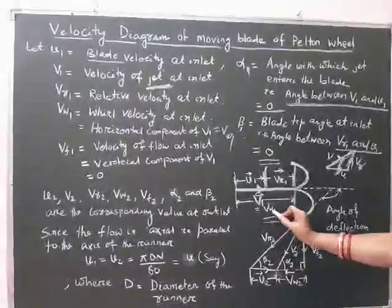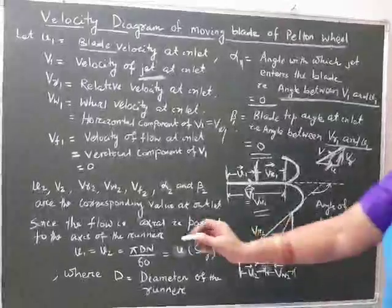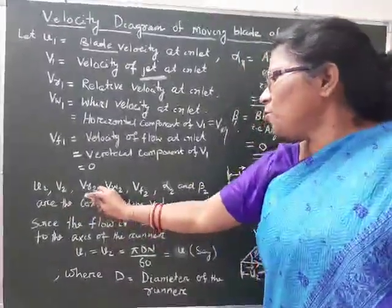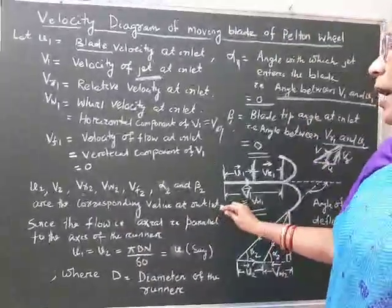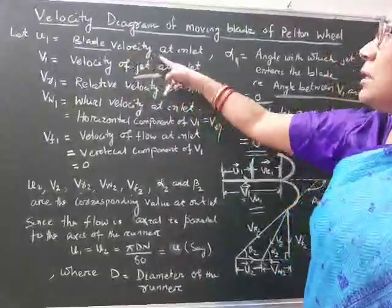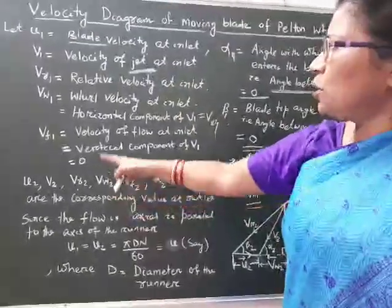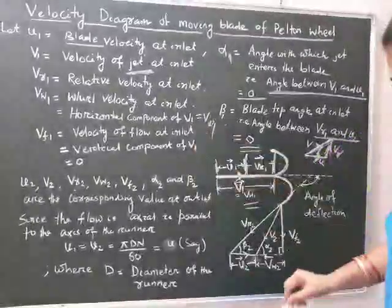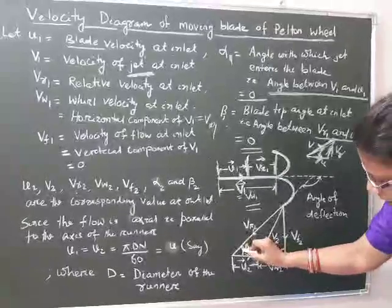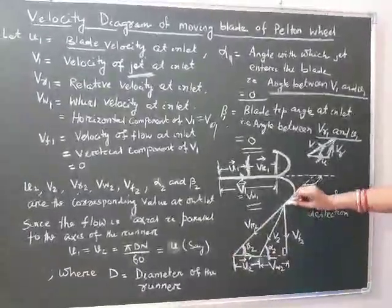At outlet, the corresponding values are u2, V2, Vr2, Vw2, Vf2, alpha2, and beta2. u2 is the blade velocity at outlet, V2 is the velocity of the jet at outlet, Vr2 is the relative velocity at outlet, and Vw2 is the wheel velocity at outlet — that is, the horizontal component of V2. In this case, alpha2 and beta2 are not equal to 0°. Vr2 is the relative velocity at exit.